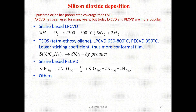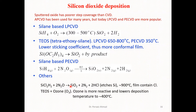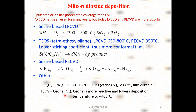Other SiO₂ deposition techniques include etching of silicon at approximately 900 degrees centigrade, though the resulting film may contain chlorine as an impurity. TEOS combined with ozone can also be used; ozone's higher reactivity lowers the deposition temperature to 400 degrees centigrade.